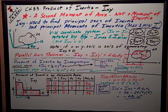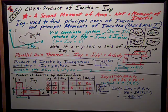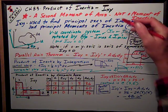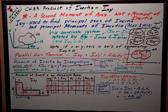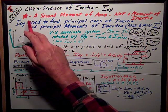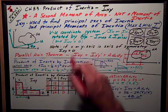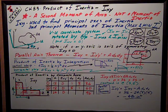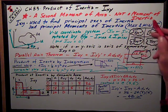I'm going to talk on this video about chapter 8.3 from our textbook, Product of Inertia, which we call IXY. Product of Inertia is a second moment of area, kind of like moment of inertia, but it's not a moment of inertia.